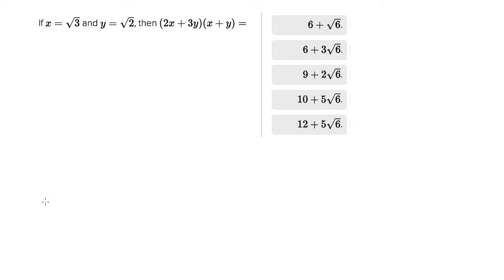This is Tom Rose and we're dealing with a plug-and-chug problem. They give us values for X and Y and say evaluate this expression, which has a bunch of X's and Y's in it. The process is basically plug in and then simplify. The only real choice is when to plug in. One option is to plug in immediately, but dealing with numbers and radicals is actually more cumbersome than dealing with variables. Also, none of the answer choices have parentheses, so we're going to need to FOIL this out.